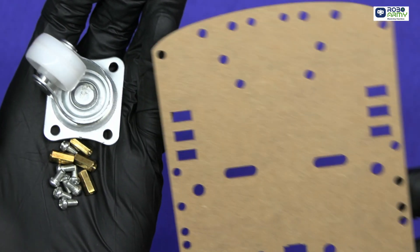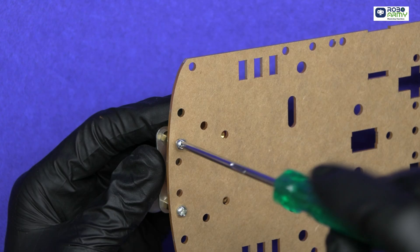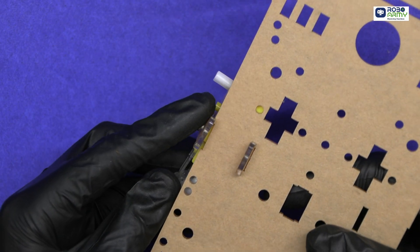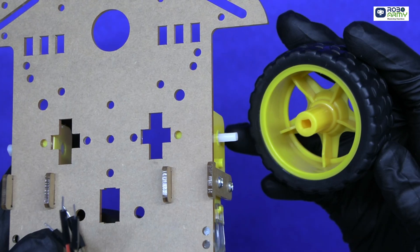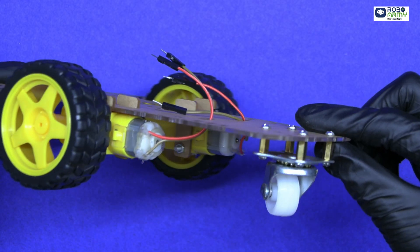Now assemble the car chassis. Mount the caster wheel using the screws and bolts which come with the chassis kit. Mount the motor properly on the chassis and pass the wire from the holes provided. Connect the wheel by matching the slot on the wheel and motor shaft. Now chassis assembly is complete.